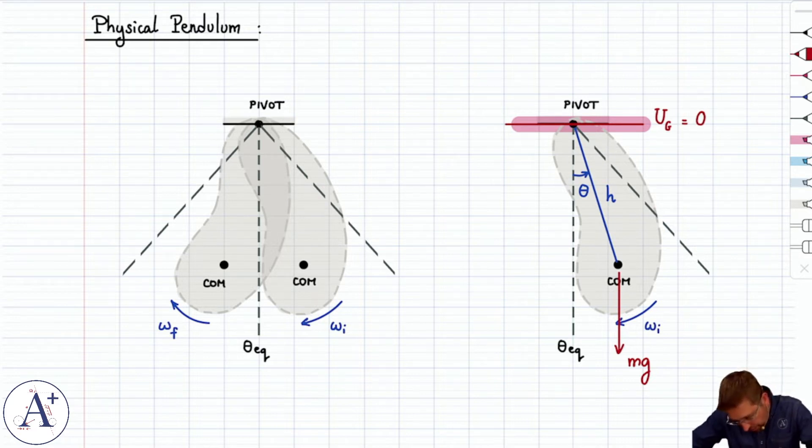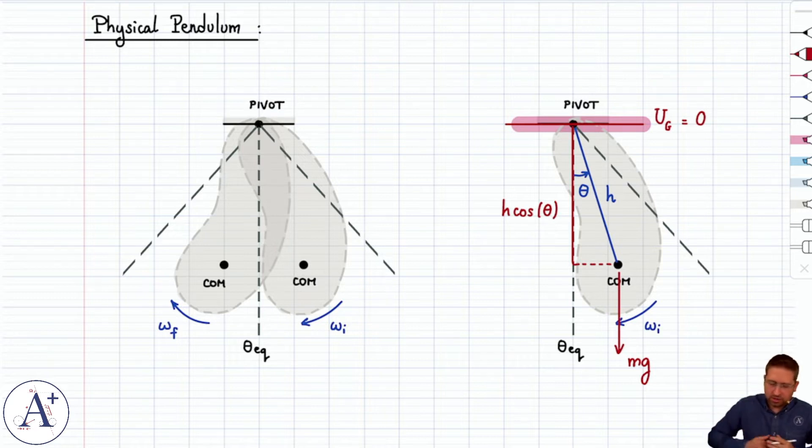And the answer is that, well, how far below is given by this distance here. And so, this is how far below the center of mass is, and this is going to be h cosine of theta. Now, careful, the distance itself is h cosine of theta, but the gravitational potential energy will be negative.